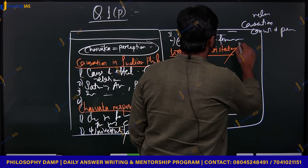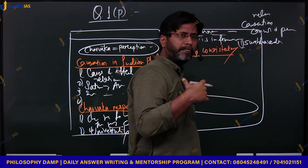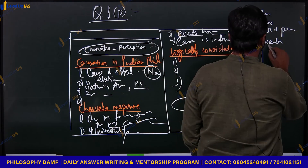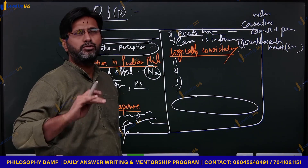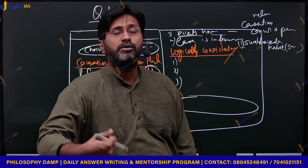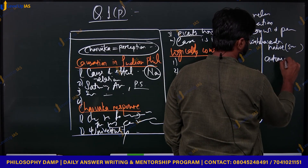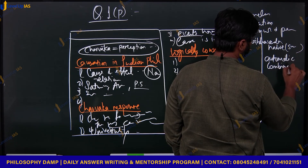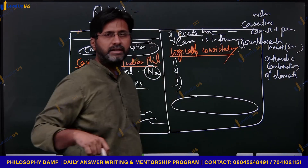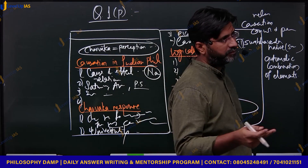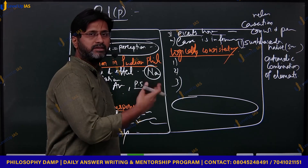Charvaka also talks about Svabhavavad - things behave in their own natural way, their svabhav. There is no cause behind anything, no God or ultimate cause. Things happen through automatic combination of elements. If we accept causation, we have to accept the concept of an ultimate cause, which Charvaka obviously disagrees with. So Charvaka denies causation entirely on these grounds.